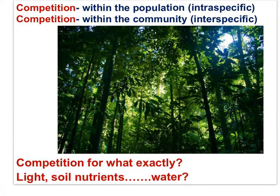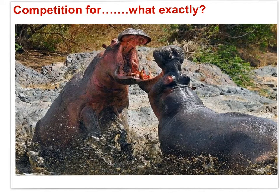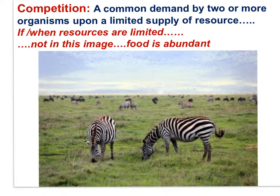Competition in a community involves all species, even producers. What do producers compete for? Of course, producers compete for light, soil nutrients, and water. In this photograph of a rainforest, we probably have both intraspecific and interspecific competition for light, soil nutrients, and soil water. These gulls would experience intraspecific competition for nest sites on a cliff face. Here we can see intraspecific competition between two male hippos for females with which to mate. Competition is most intense when resources are limited or in short supply. The zebras in this image compete with each other for food, but only if the food supply is limited — which it appears not to be in this season, such that intraspecific competition is not very intense.